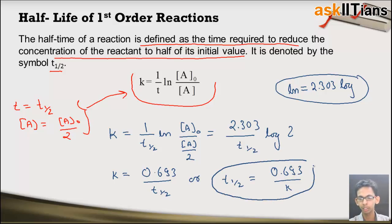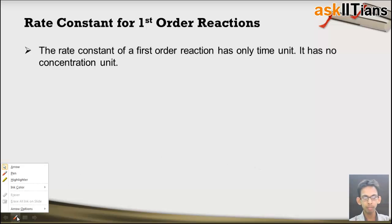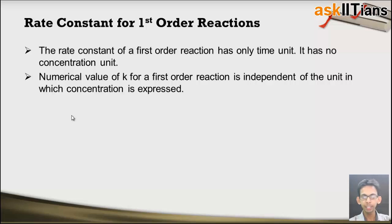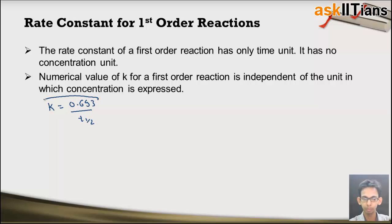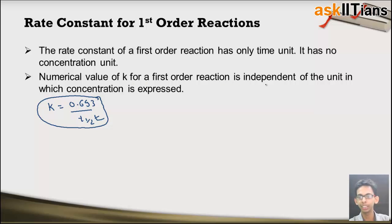This expression for half life tells us a great deal about the nature of first order reactions. Now let's discuss the rate constant for first order reactions. The rate constant k has only time units. From k equals 0.693 over T-half, we can see that k is independent of the initial concentration of the reactant. It depends only on time, so its unit is per second, per minute, or per hour — depending on the time unit used — and it has no concentration unit.